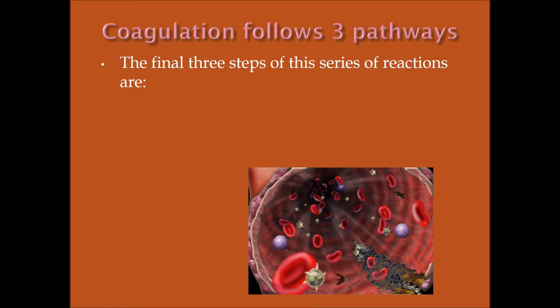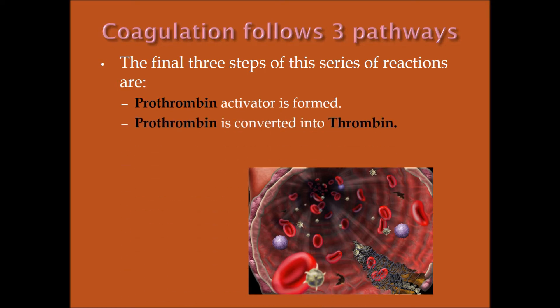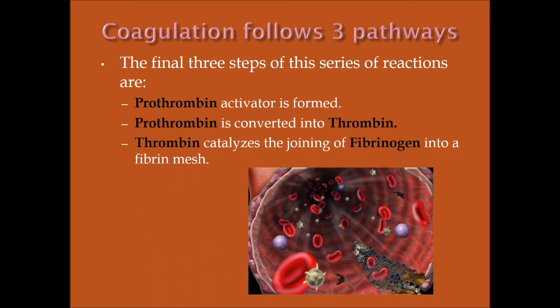Coagulation follows three pathways. The final three steps of these series of reactions are: prothrombin activator is formed, prothrombin is converted into thrombin, and then thrombin catalyzes the joining of fibrinogen into a fibrin mesh. If you're not sure what these are, check the back of your textbooks for definitions of prothrombin, thrombin, and fibrinogen — the three pathways that form the reactions for a clot.